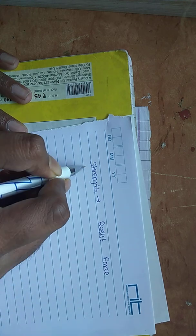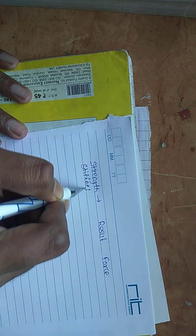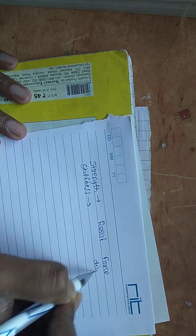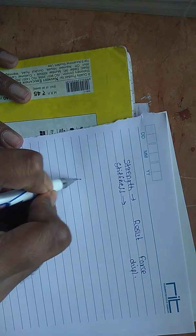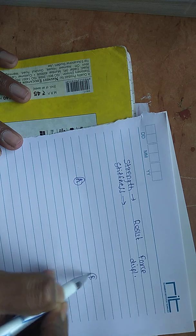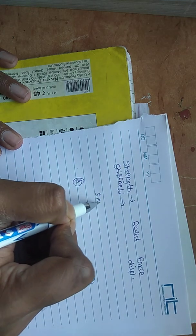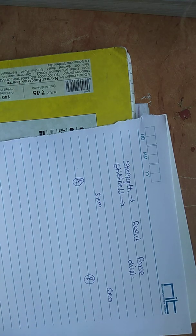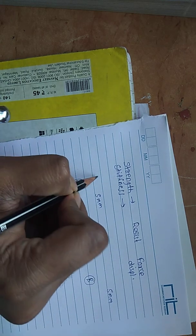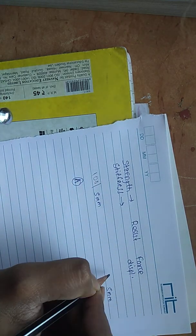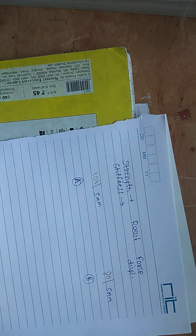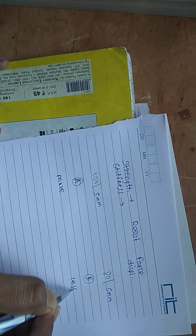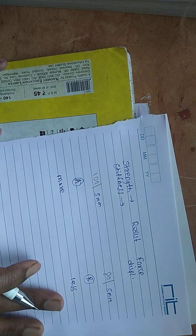Second one is stiffness. Stiffness resists displacement. In simple words, if I have body A and body B and I want to displace both bodies by 5 mm, then I will check the amount of force that they require. Suppose this requires 100 kN and this requires 80 kN. Then we can say that this body is more stiffer and this body is less stiff.